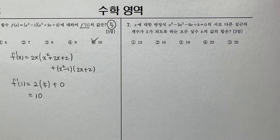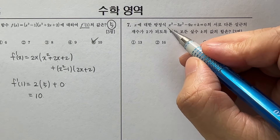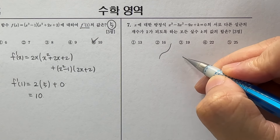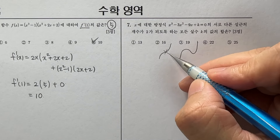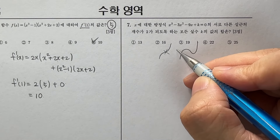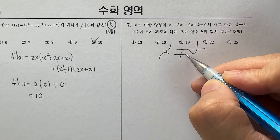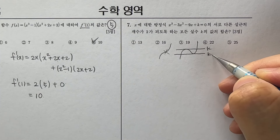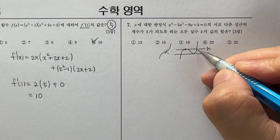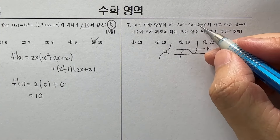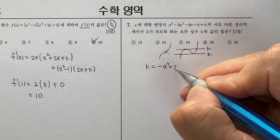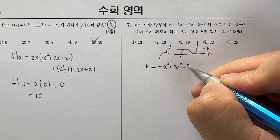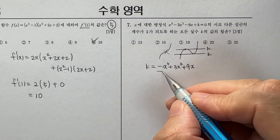X에 대한 방정식이 서로 다른 실근의 개수가 2개가 되도록 하는 실수 k 값의 합을 구하는 문제입니다. 3차 함수 그래프는 이렇게 생겼거나 아니면 이렇게 생겼죠. 서로 다른 실근의 개수가 2개가 되려면 실근의 개수가 2개이면 극대점 아니면 극소점에 k가 접해야겠죠. 그래야지만 서로 다른 실근이 2개가 존재합니다.